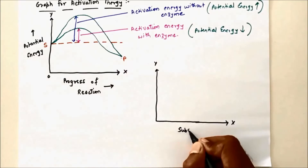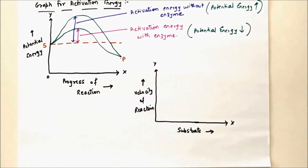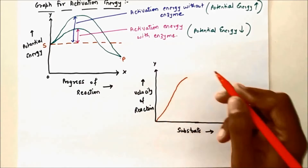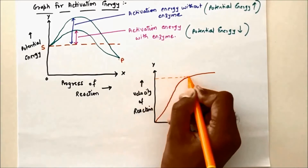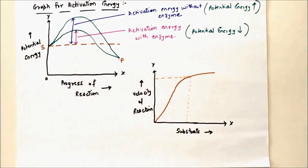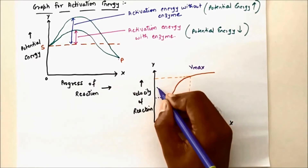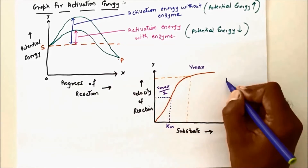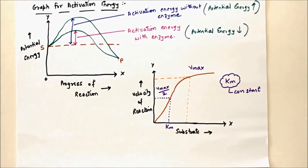Another graph has substrate on one side and velocity of reaction on the other, giving a curve. The peak is called Vmax — maximum velocity of the reaction. Half of Vmax (Vmax/2) gives the Michaelis-Menten constant, Km. This graph may appear in the NEET exam.